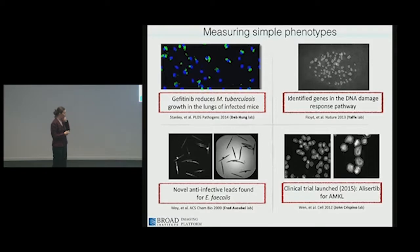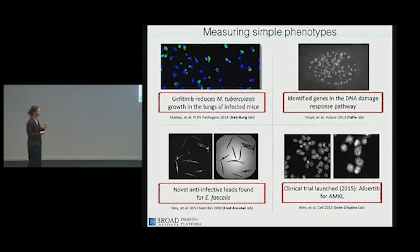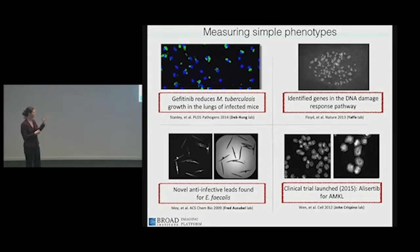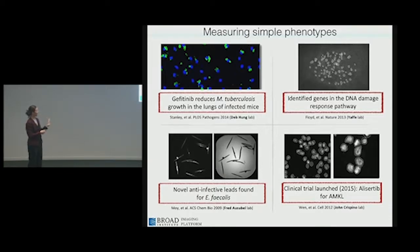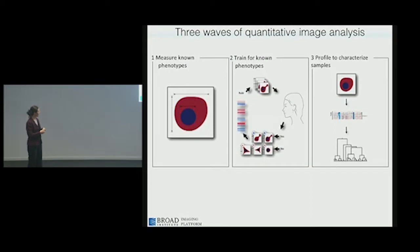One we're quite proud of—because it's the first that's progressed to a clinical trial from my lab—involved a very simple DNA stain, with the software identifying each nucleus and measuring the polyploidy of the nuclei. The goal was to treat AMKL, a form of leukemia, not by killing the leukemic cells but by causing them to become polyploid and thus differentiate into a less harmful state. These are all very simple examples: counting speckles, measuring fluorescence intensity, and so on.